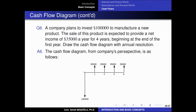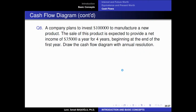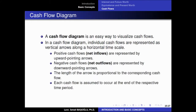Over this time scale, this point is time zero — which is the current time. This is the end of the first year, the end of the second year, the end of the third year, and the end of the fourth year. We have cash flows, and these cash flows are shown with vertical arrows. Individual cash flows at any time point are represented as vertical arrows over a horizontal time scale, with the time units marked on the horizontal line.